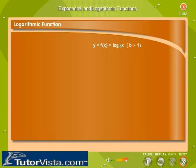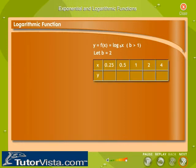A general logarithmic function is of the form y equals f(x) equals log x to the base b, with a positive base b greater than 1. Let us take a particular value for b as 2. To draw the graph of the function, we first make a table of values. We take values of x between 0.25 and 4, and find the corresponding values of y.